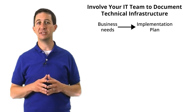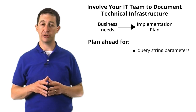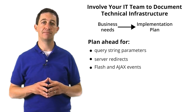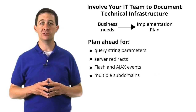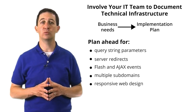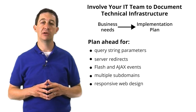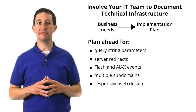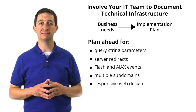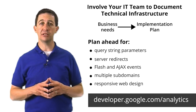There are a few website technologies that will require additional planning — for example, query string parameters, server redirects, Flash and Ajax events, multiple domains and subdomains, and responsive web design. All of these scenarios require extra attention when designing your implementation plan for tools like Google Analytics. It is absolutely critical to have a thorough conversation with your IT team to understand the environment you want to measure. For guidance on how to adapt your implementation to these technologies, check out our developer resources.